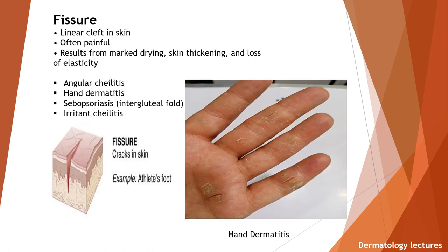Fissure is a linear cleft in skin, often painful, that results from marked drying, skin thickening, and loss of elasticity. Examples are angular cheilitis, hand dermatitis, sebopsoriasis, and fissures in the intergluteal fold and irritant cheilitis. Here you can see the example of fissures in hand dermatitis.